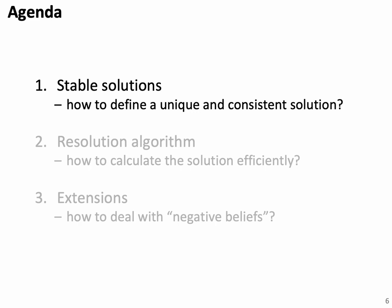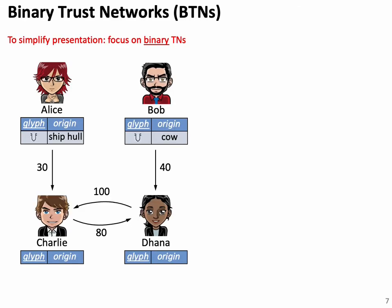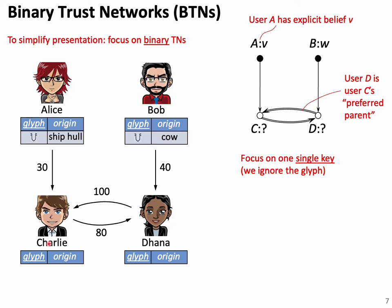First, let's discuss how to define a principled solution to automatic conflict resolution in the presence of preferred trust mappings. For exposition we focus on binary trust networks — binary means any user can have at most two other users from which they import beliefs. In the appendix we show how to extend the ideas to an arbitrary number of parents. Furthermore we focus on only one key, because the problem of which value should be propagated is really independent across different keys. So we have four nodes, each may have one or two parents, and some nodes already have an explicit belief. Our question is what should the others believe.